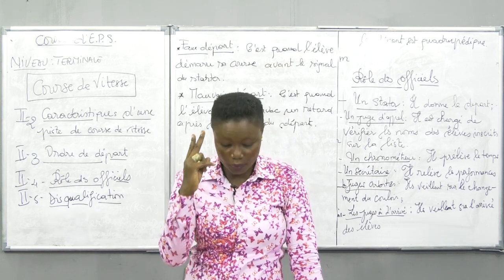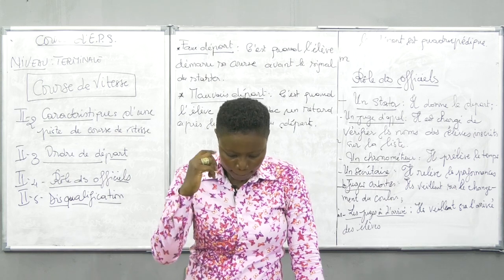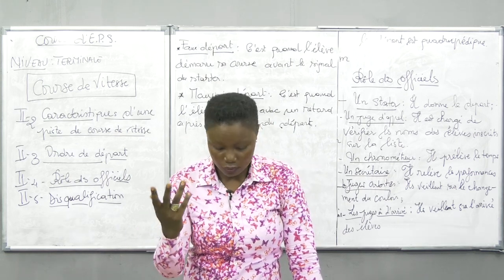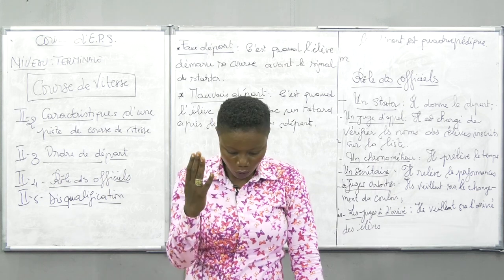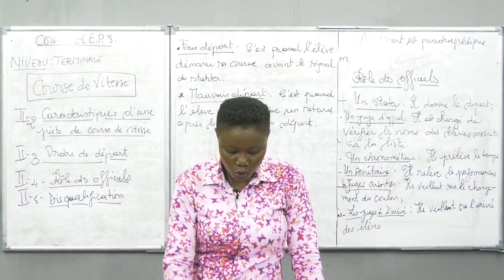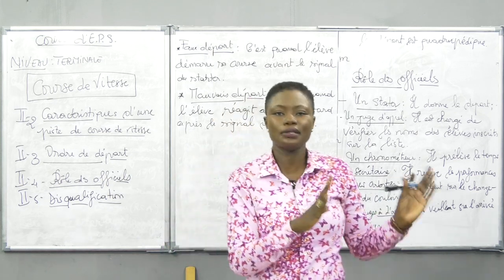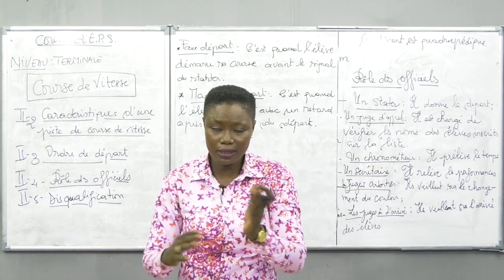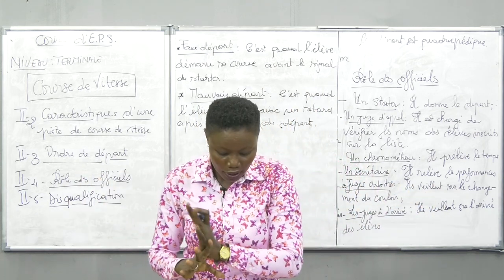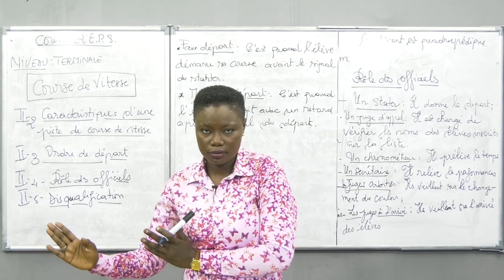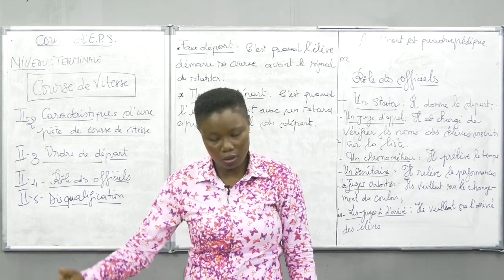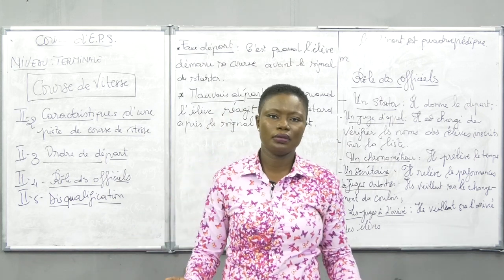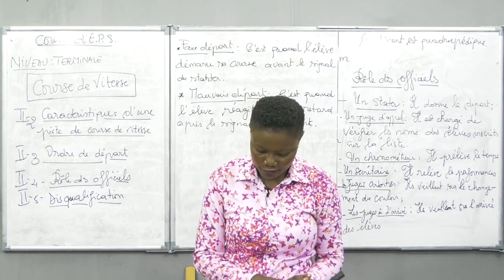Il est copé d'un carton jaune. Mais quand il quitte volontairement son couloir également, là il est copé d'une faute. Lorsque l'athlète fait obstruction et vient gêner celui qui est à côté, ou bien il quitte volontairement la piste, là également il est disqualifié.